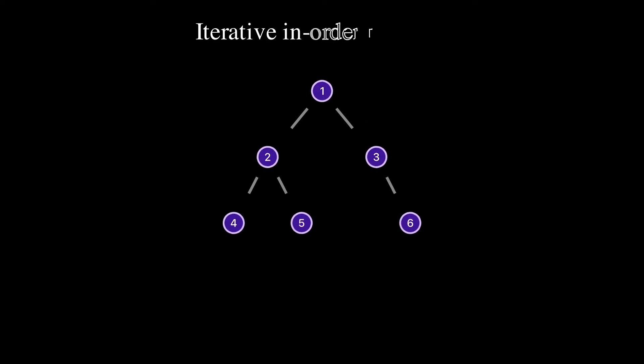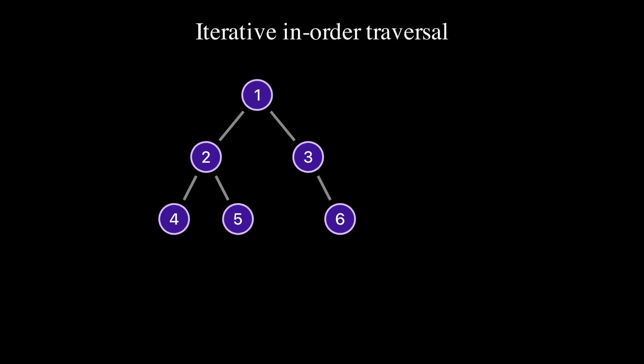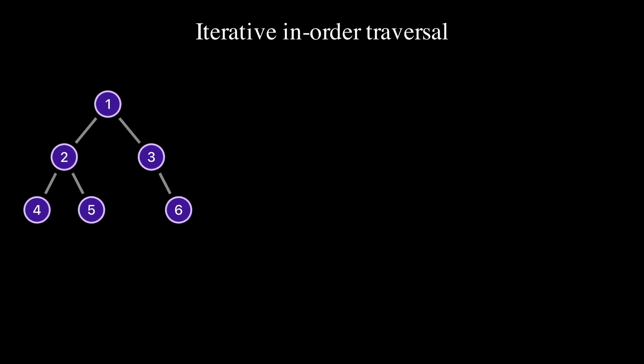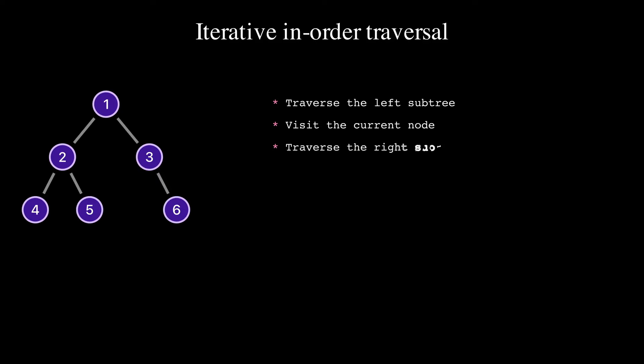Hey everybody, this is Simon. In this video we will take a look at how to implement iterative in-order traversal of a binary tree. For in-order traversal we traverse the left subtree, visit the current node, and traverse the right subtree.